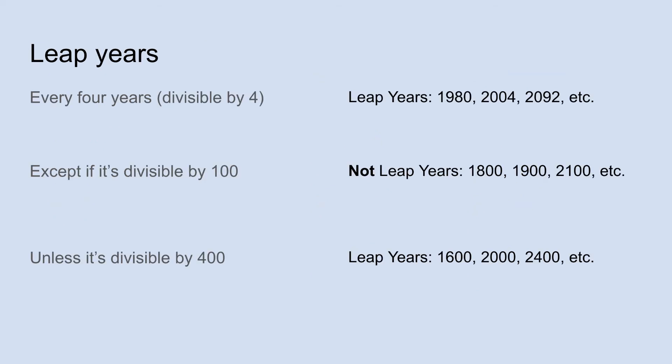So when is a leap year? Leap years exist because the time for Earth to rotate around the Sun is not exactly 365 days — it's about 365 and a quarter. So basically, a leap year comes every four years: if the year is divisible by 4, like 1980, 2004, or 2092, it's a leap year with February 29th. However, it's not a leap year if the year is divisible by 100 — so 1800, 1900, and 2100 are not leap years — unless the year is also divisible by 400. So 2000 actually was a leap year, as will be 2400.